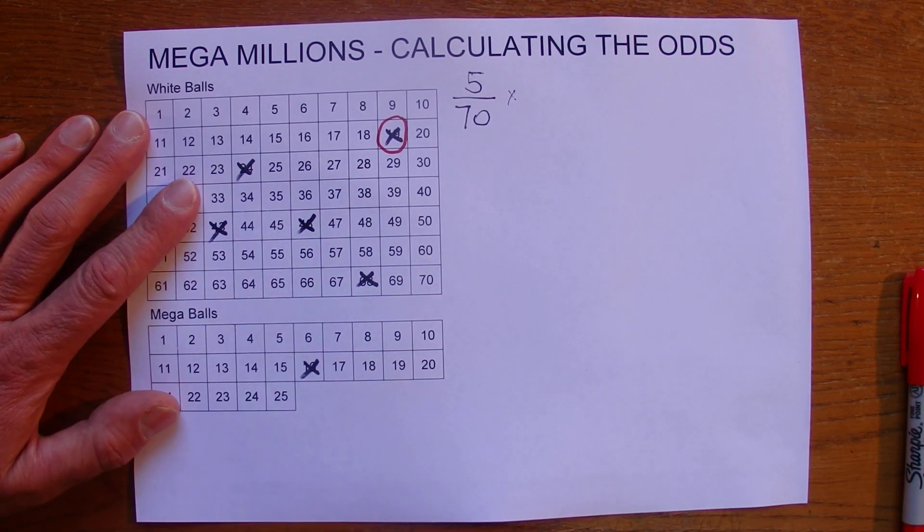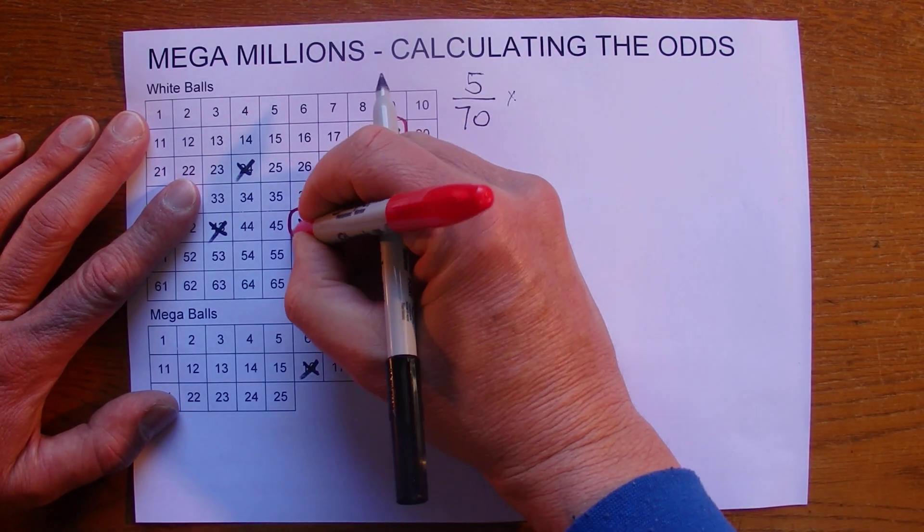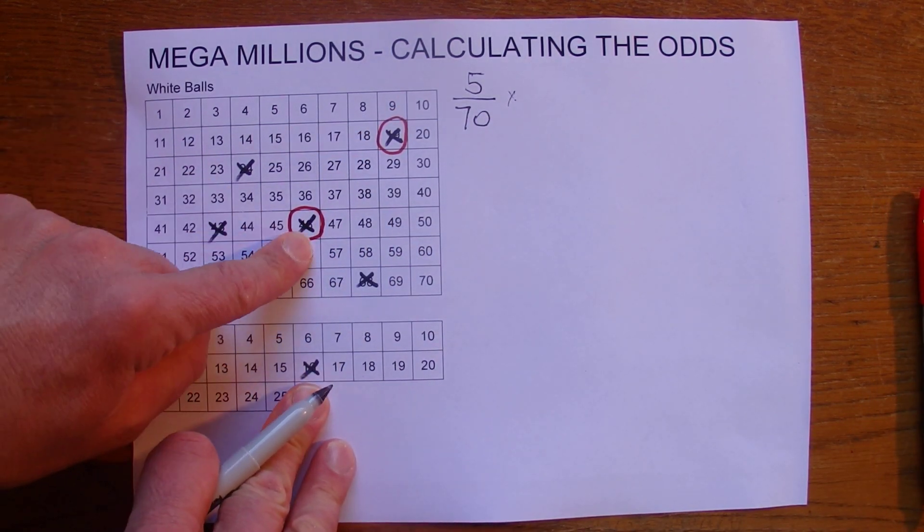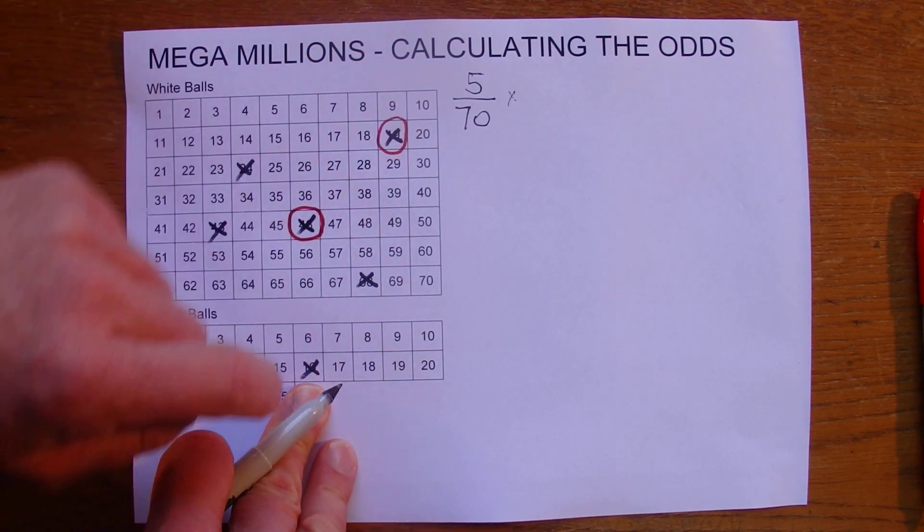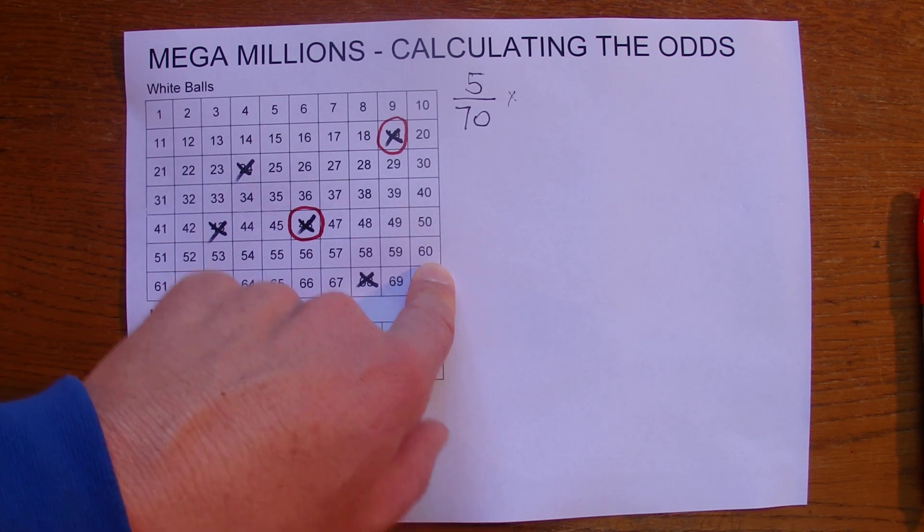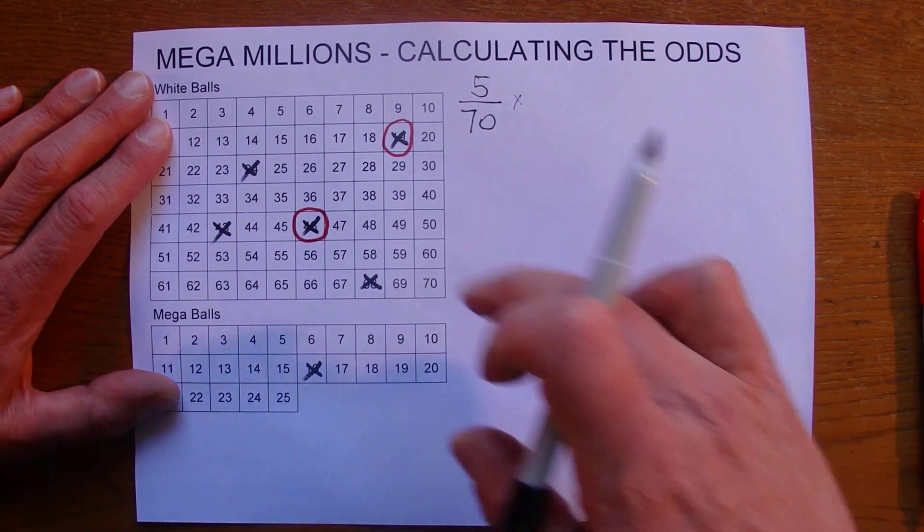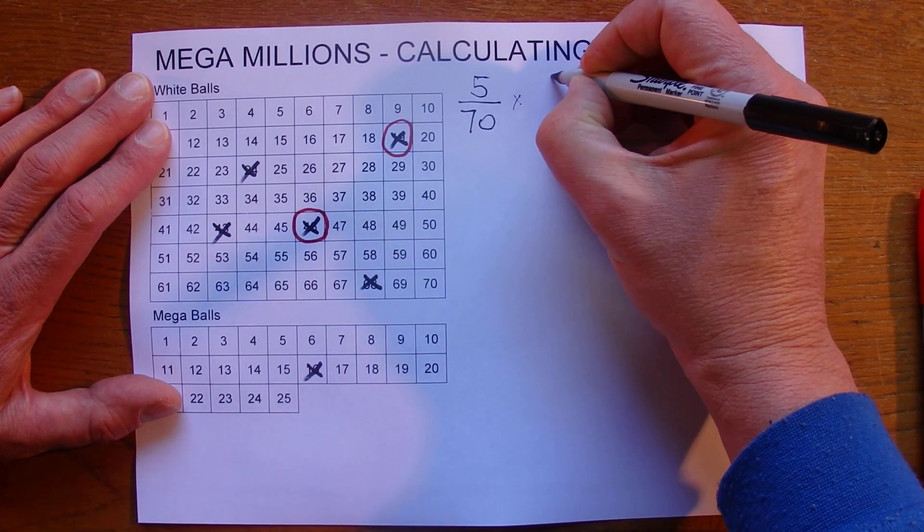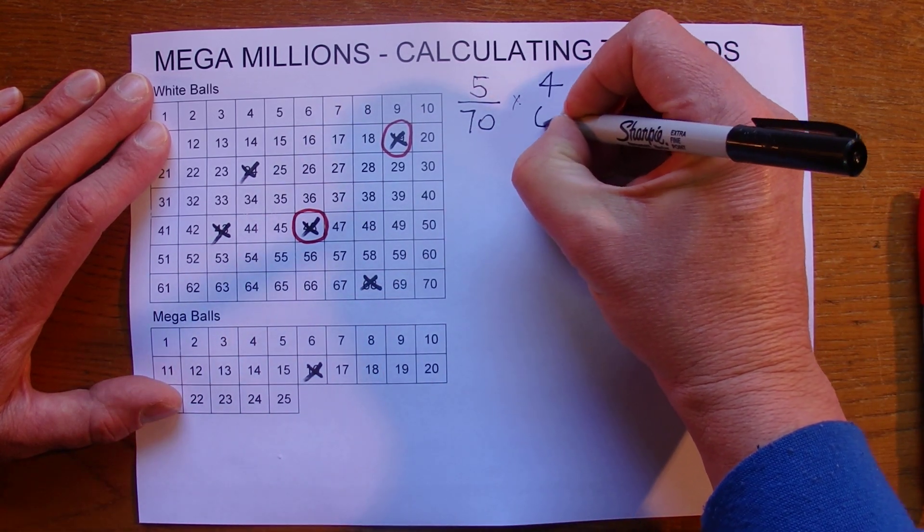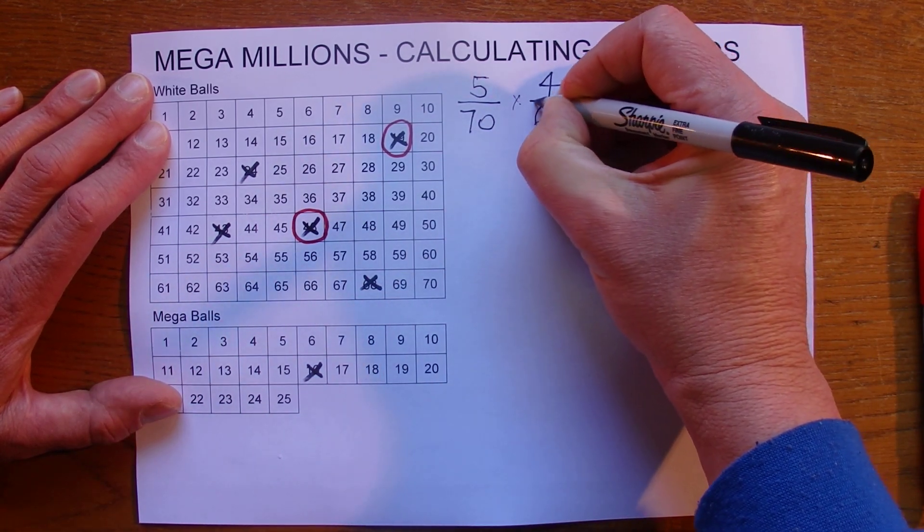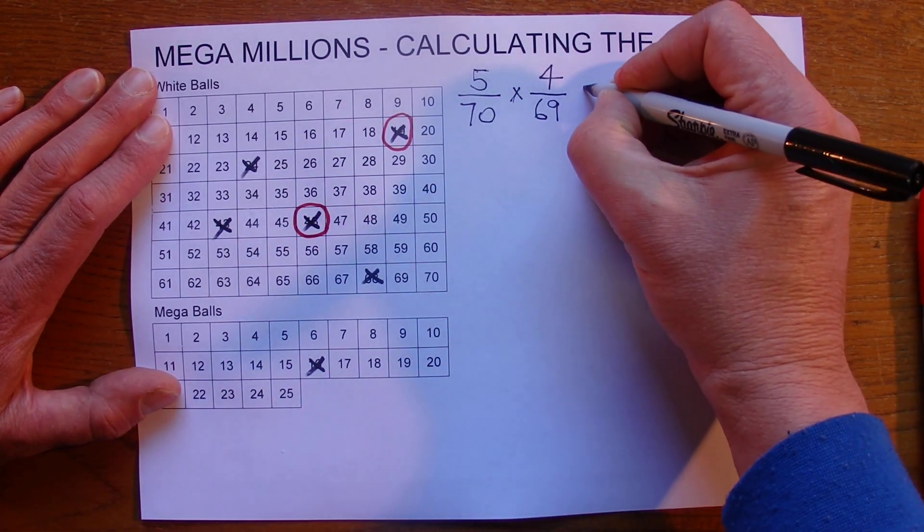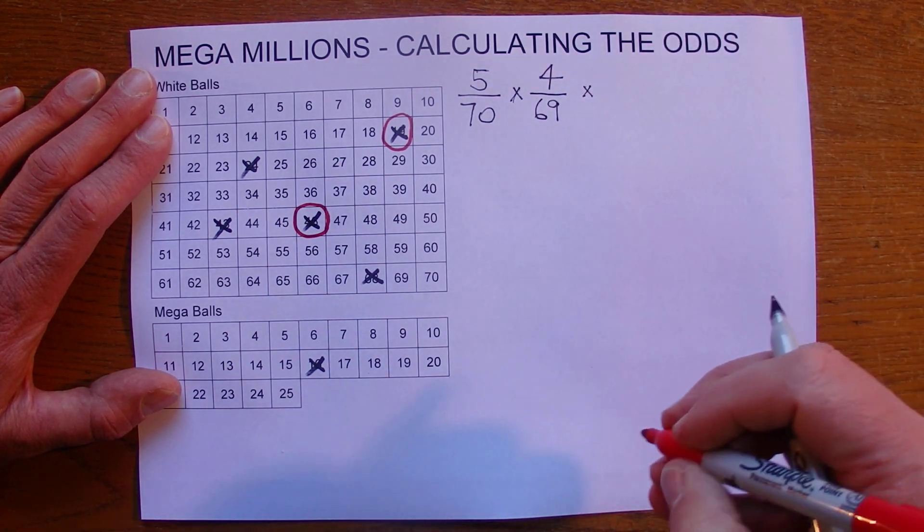And then the second ball is drawn out and you've also selected that ball. But this time the probability of selecting the second ball, if you've already got one that's already been crossed off on your list and there's now only 69 in the barrel because one's already been drawn, is now four chances and there's only 69 left in the barrel to be drawn. So you've got four chances in 69 of the second ball being a match as well.